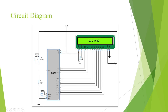This is the circuit diagram for our project. The ports P1.0 to P1.7 of the 8051 are connected to D0 to D7 of the LCD. Port P2.0, P2.1, and P2.2 are connected to RS, RW, and E respectively of the LCD. VCC and ground connections are also made.